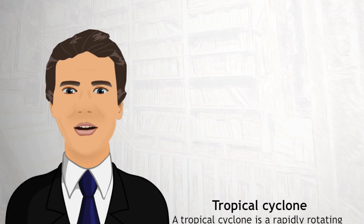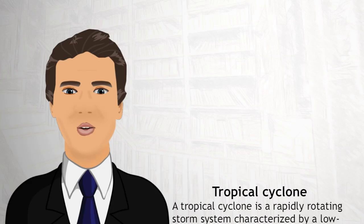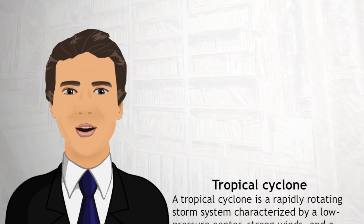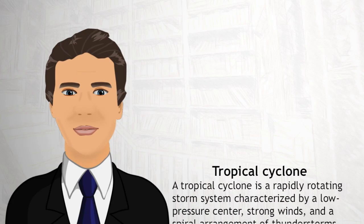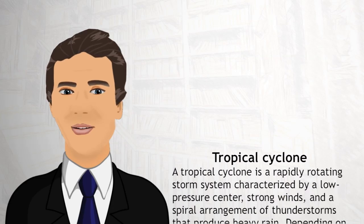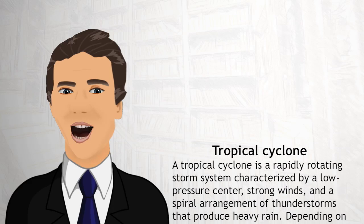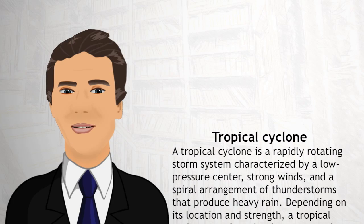A tropical cyclone is a rapidly rotating storm system characterized by a low pressure center, strong winds, and a spiral arrangement of thunderstorms that produce heavy rain.